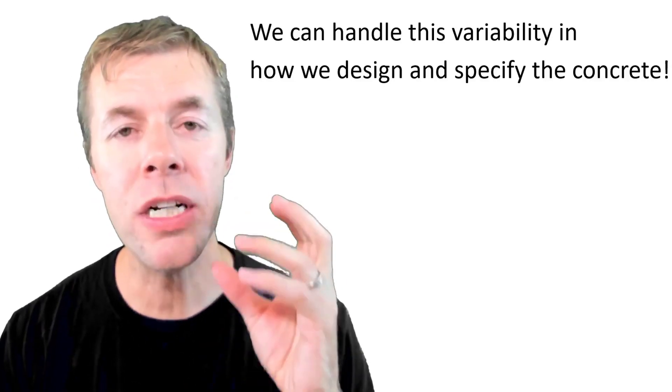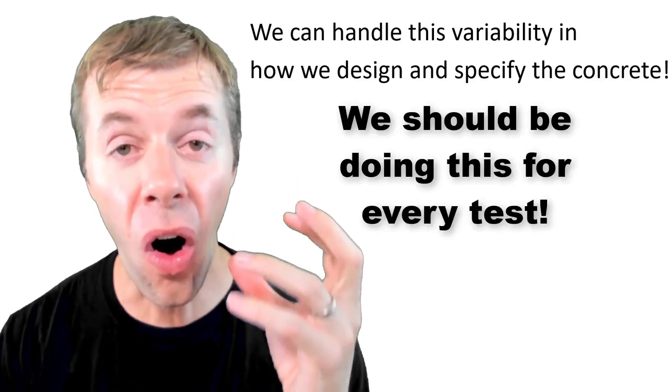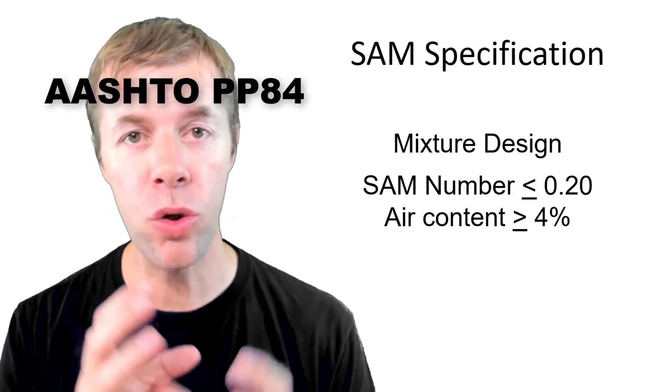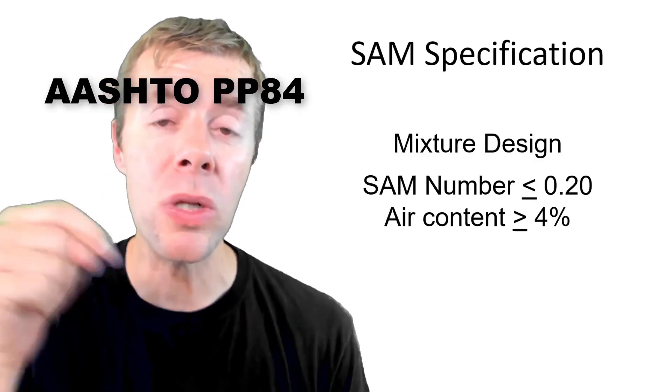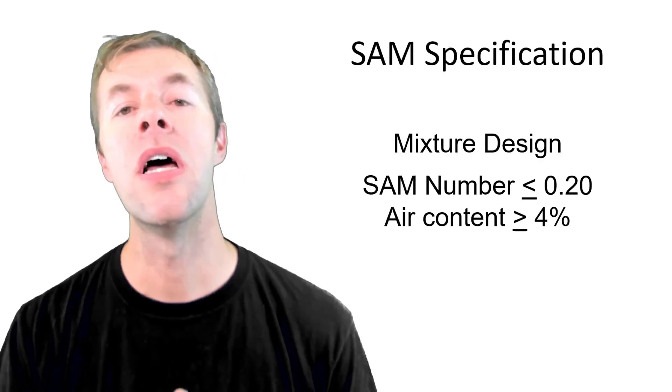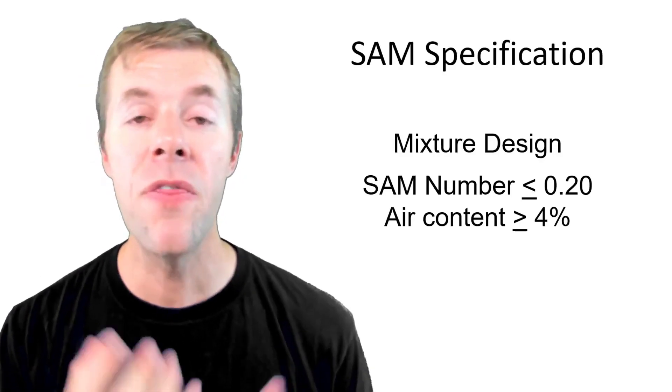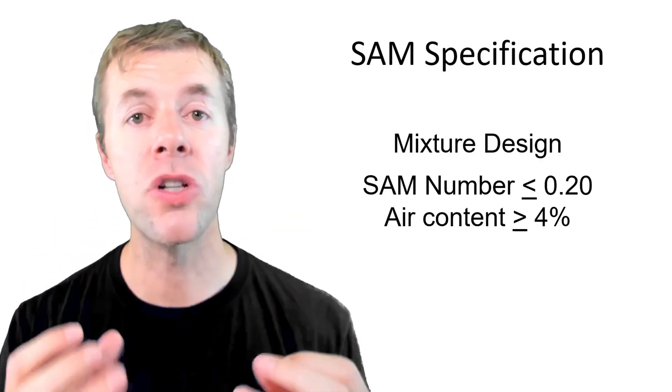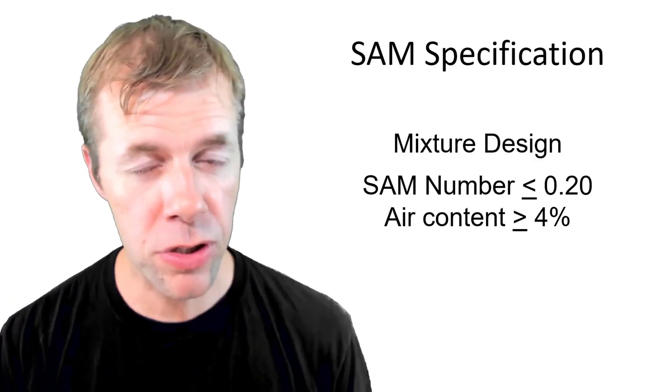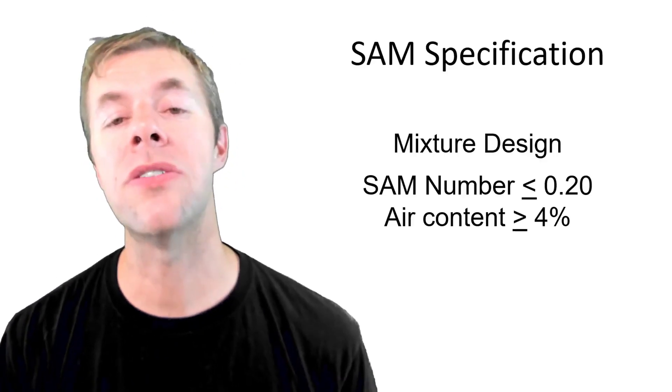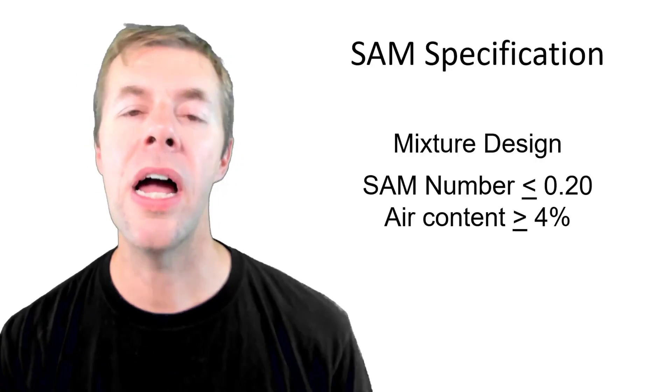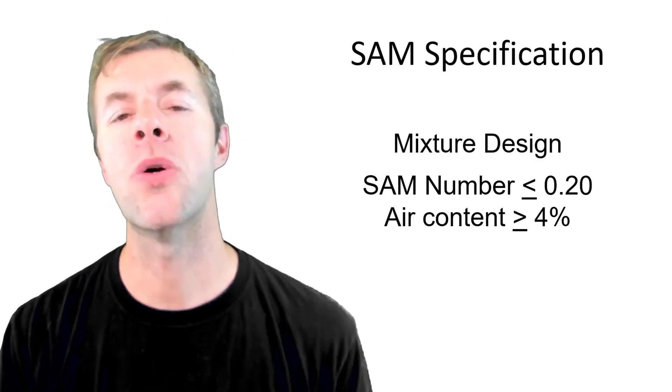So in AASHTO PP84, which is a really cool document which I will link to down below, it talks about SAM specifications. This is a new document that actually covers the durability of paving concrete. In the mixture design stage we suggest that a SAM number should be less than 0.20 and your air content should be greater than 4%.